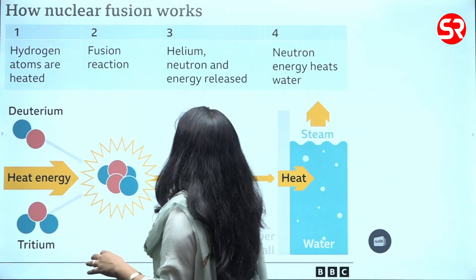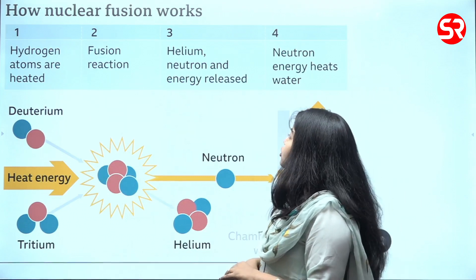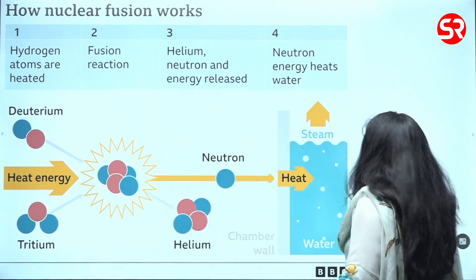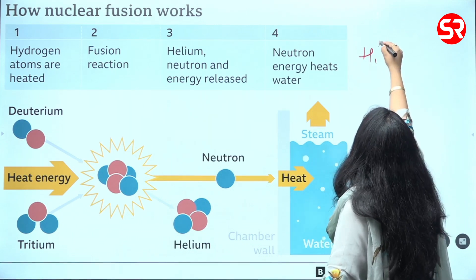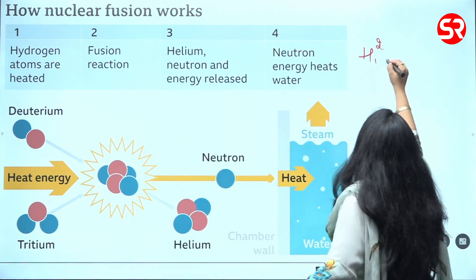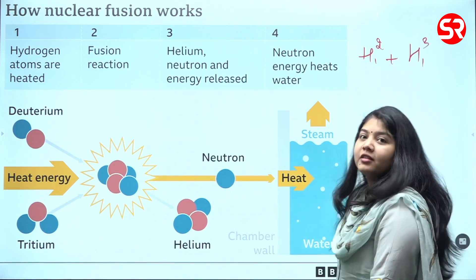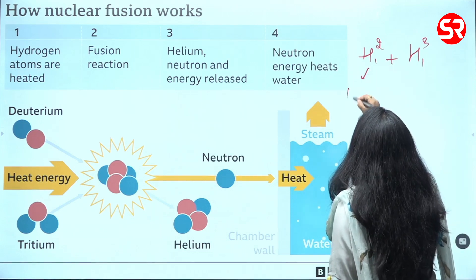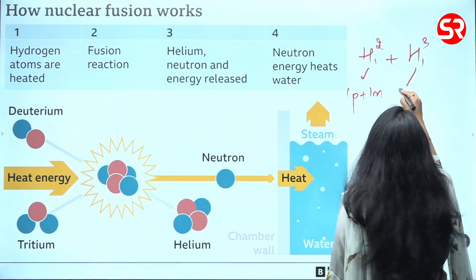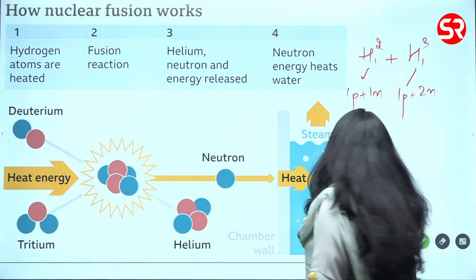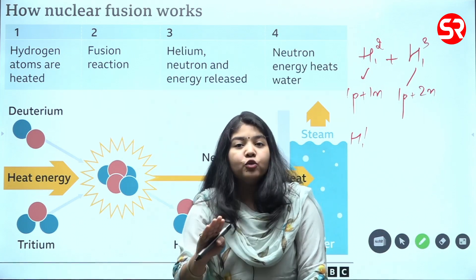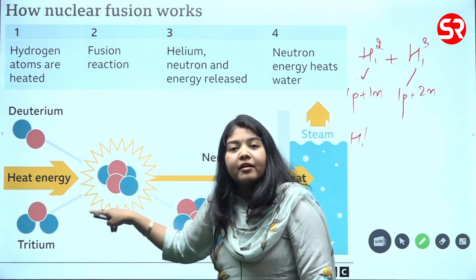Let us understand what happens in a fusion reaction. Nuclear fusion works using hydrogen atoms — not the common hydrogen 1H1, but deuterium, which has atomic number 1 and atomic mass 2, and tritium, which has atomic number 1 and atomic mass 3. Deuterium has 1 proton plus 1 neutron, tritium has 1 proton plus 2 neutrons, whereas common hydrogen 1H1 does not contain any neutron. So it is the isotopes of hydrogen — deuterium and tritium — which are used.